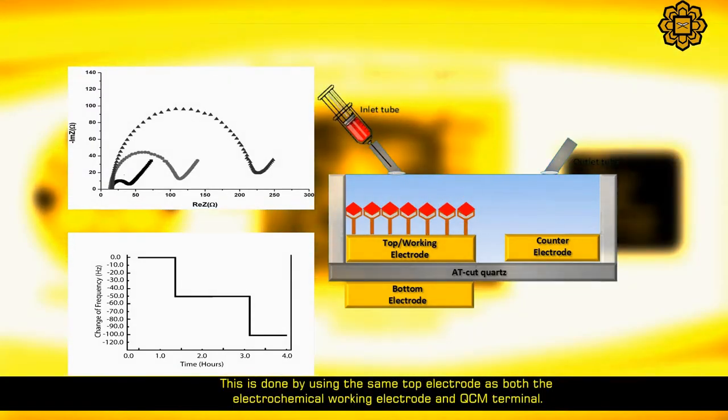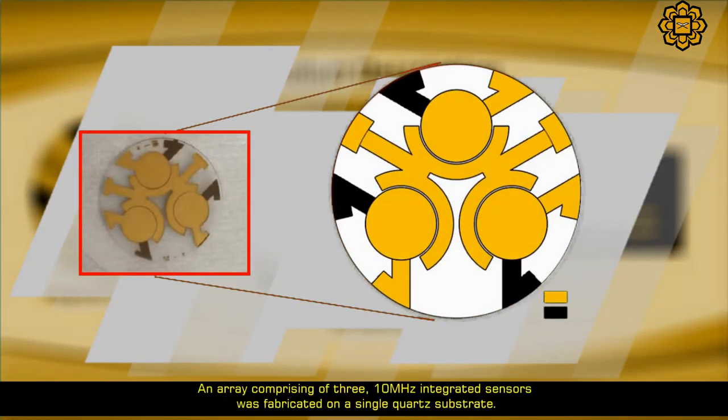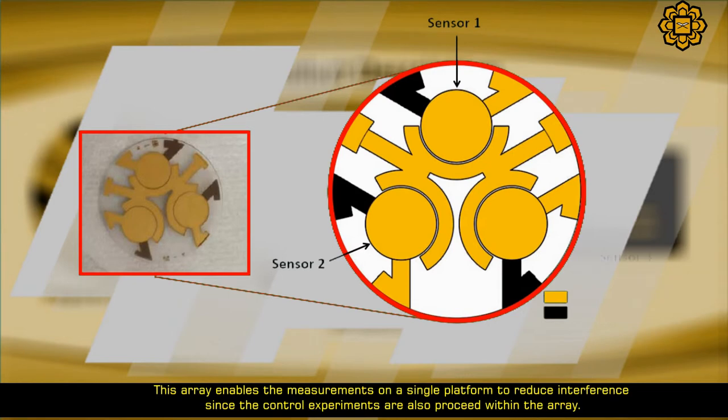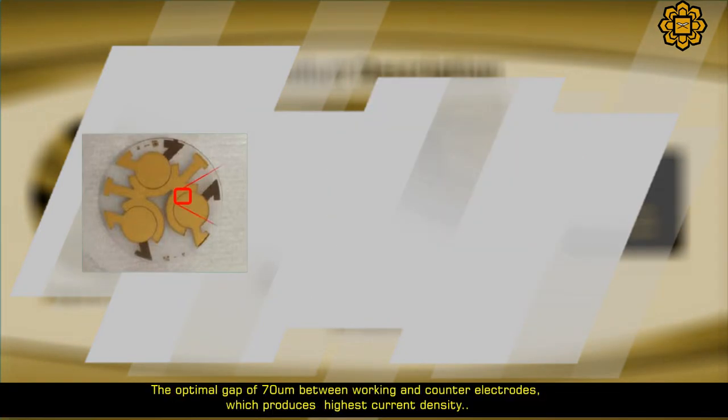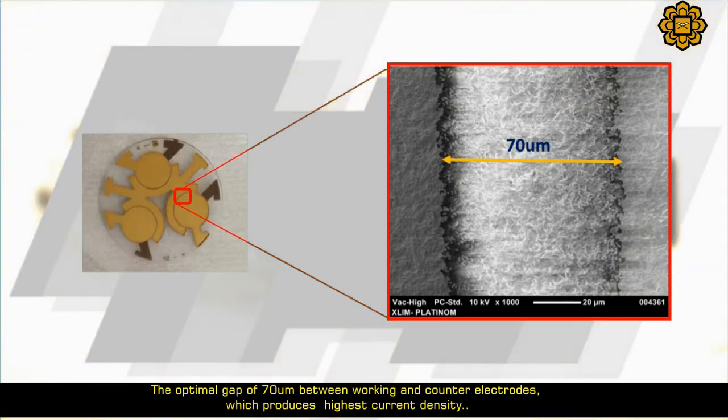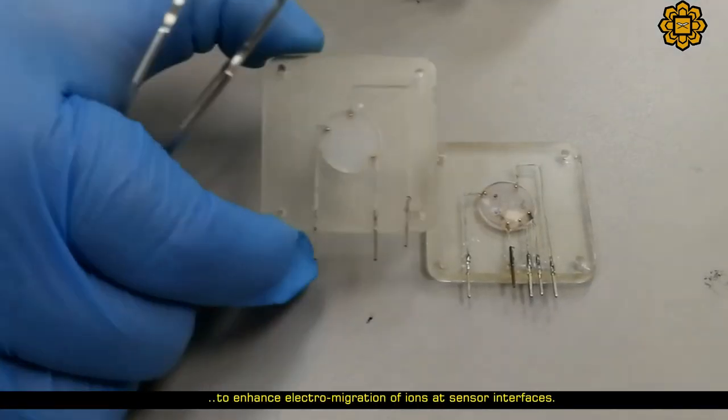An array comprising three 10 megahertz integrated sensors were fabricated on a single quartz substrate. This array enables measurements on a single platform to reduce interference since control experiments are also processed within the array. The optimal gap of 70 micrometers between working and counter electrodes produces the highest current density to enhance electrochemical migration of ions at sensor interfaces.